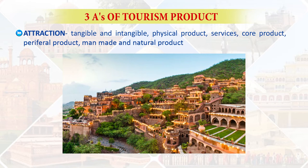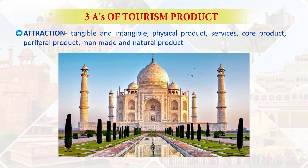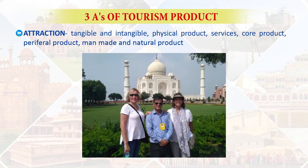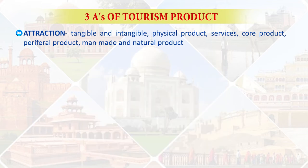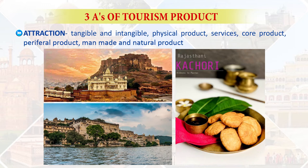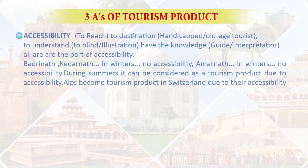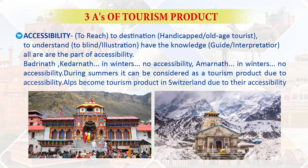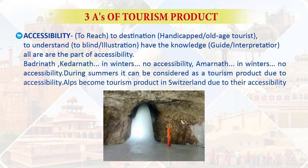When going to Agra, the Taj Mahal is a man-made attraction, while guide services are the non-tangible attraction. When visiting Jodhpur or Udaipur, you enjoy Rajasthani kachoris — the preparation and quality of the kachori are non-tangible. The second A is accessibility: Kedarnath is not a tourism product during December–January because accessibility is not there. Similarly, Amarnath cave is not a tourist product at that time. But during summers when accessibility is there, it becomes a tourism product.